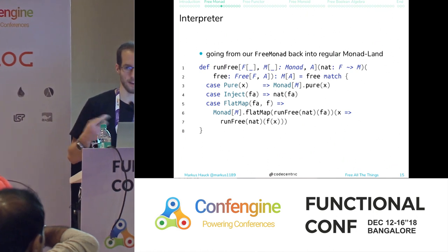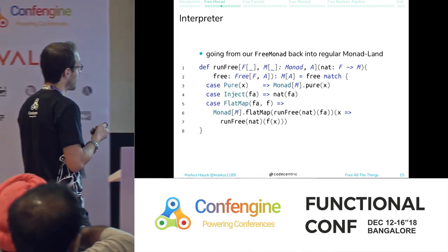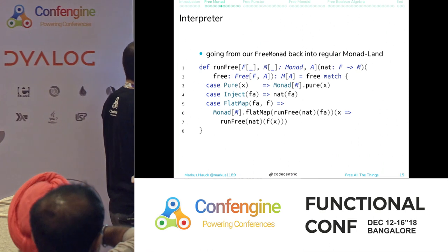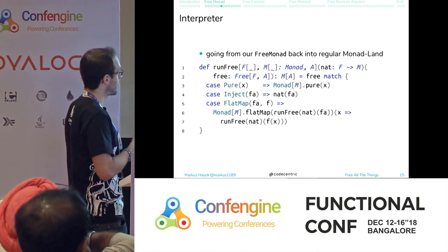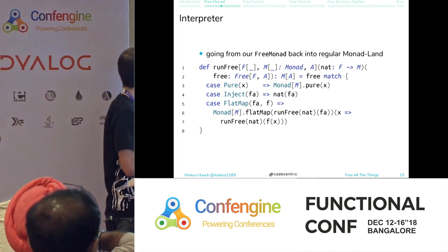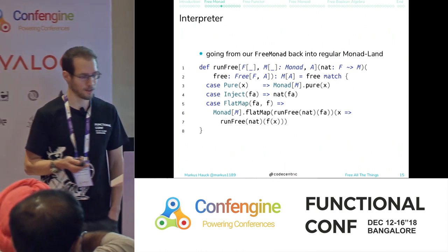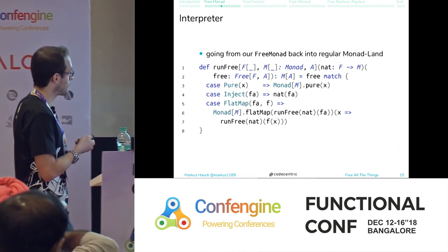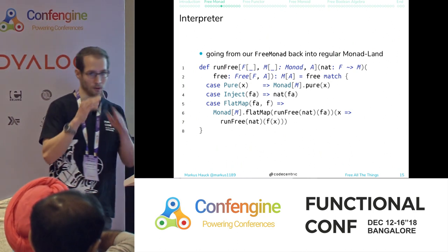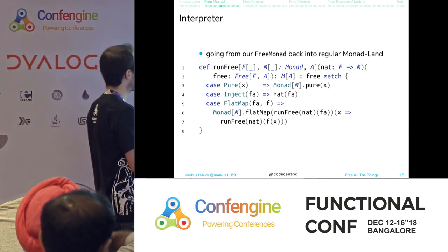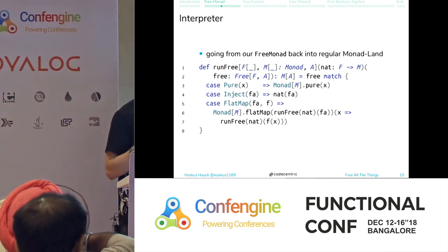To go back from our free monad into normal monads, we write a function called runFree. It takes a natural transformation that translates the higher-kinded F into some target monad M, where M has a context bound for Monad. We pattern match on the instructions: a Pure node translates to the target monad's pure; a FlatMap translates to the target monad's flatMap with runFree called recursively; and Inject calls the natural transformation, which is where your DSL is reduced into the target monad.